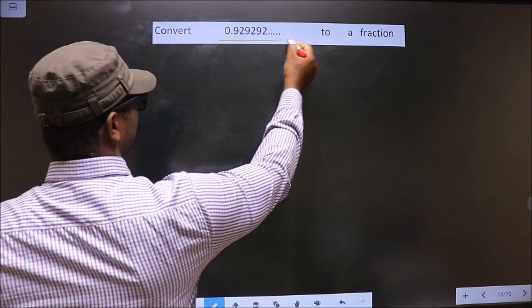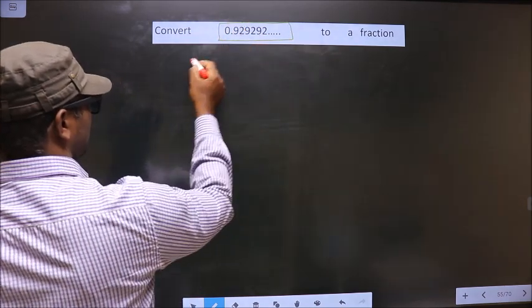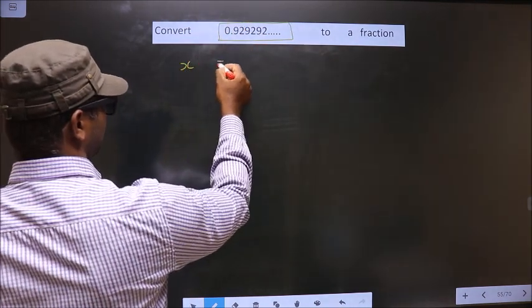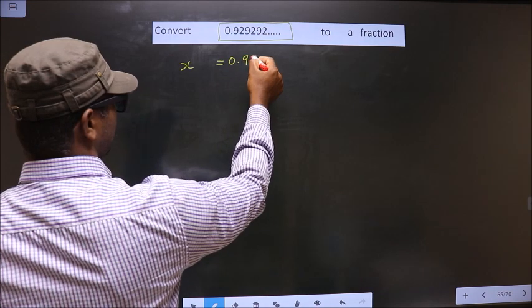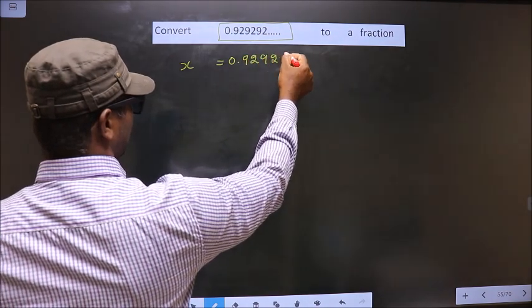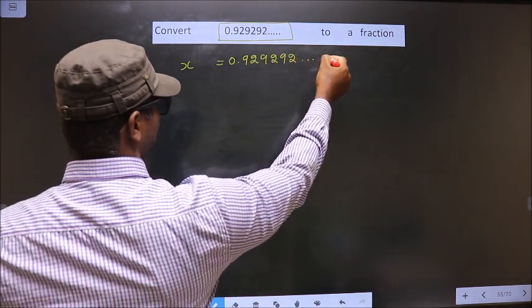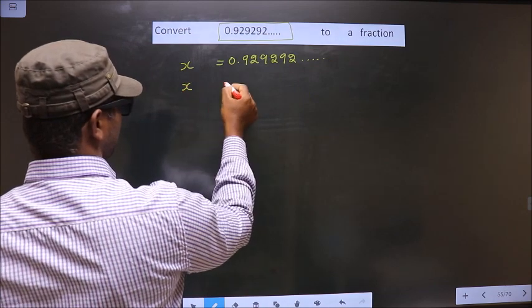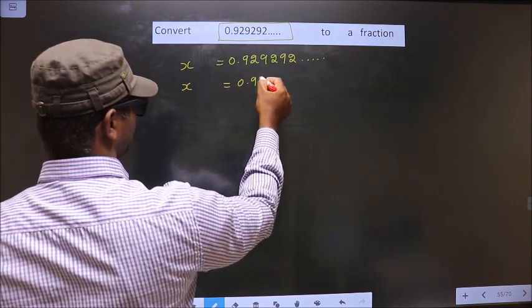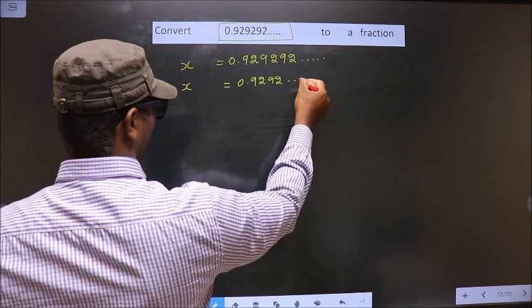First, whatever we have to convert, you take that to be x. So x equals 0.929292 and so on. That is, x equals... Okay.